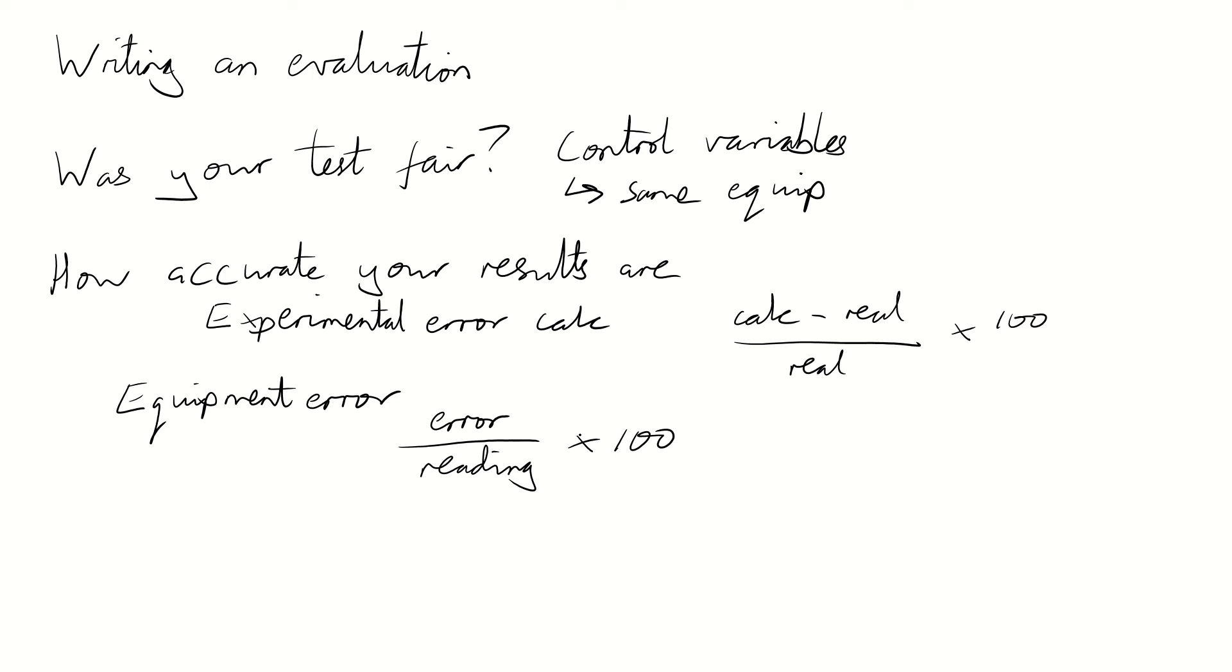So what you'll then need to do is sum all of the errors of the equipment that's actually been measuring something out. So for example, if you've used the burette, the pipette, as well as the balance, you would need to have all of those summed up to give you a total equipment error.